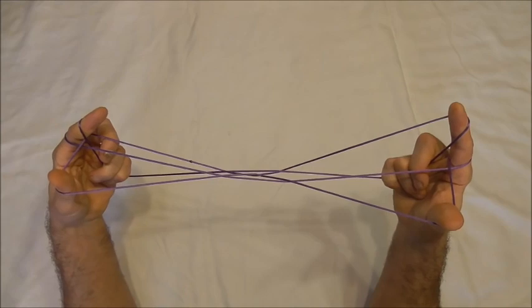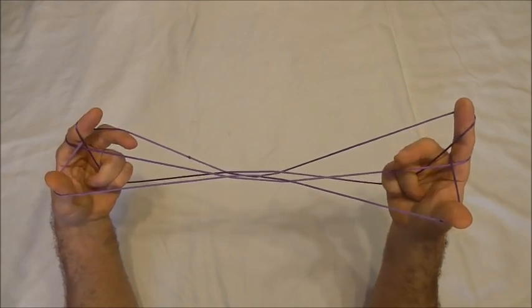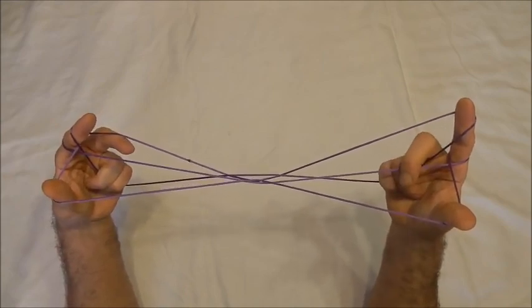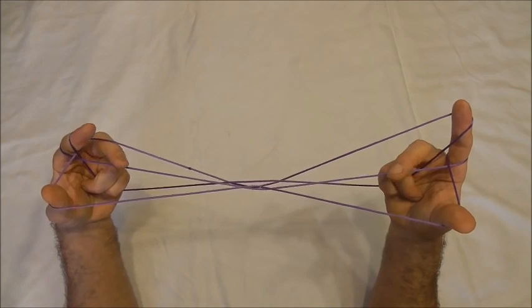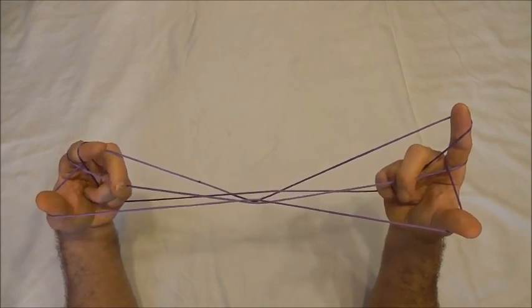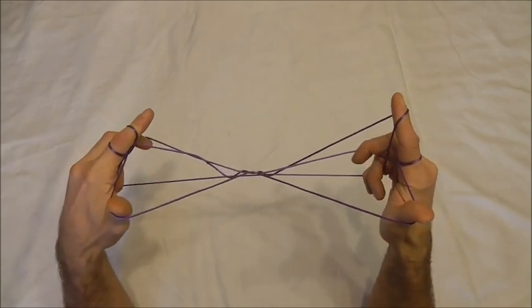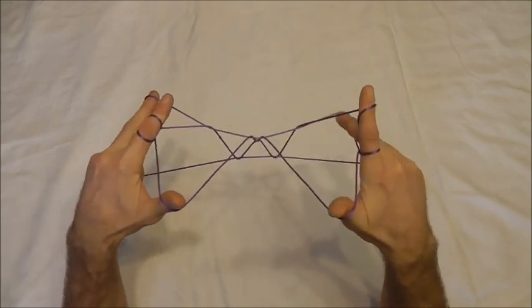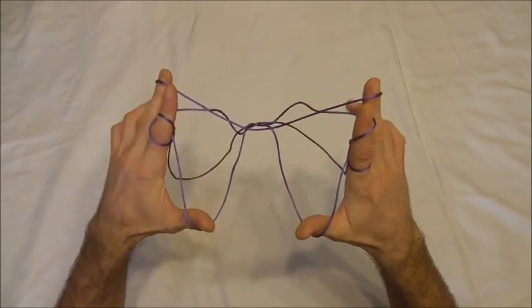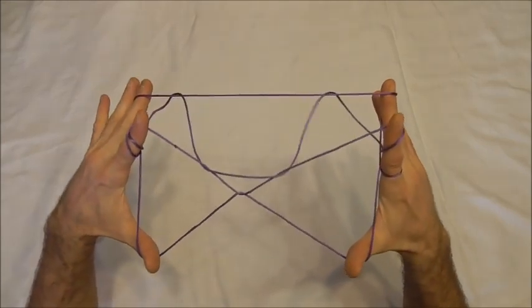Next, I want to use my middle finger to hook the lower near pointer finger string and I want to push that through the new triangle, rotate my hands forwards and release my ring and little fingers.